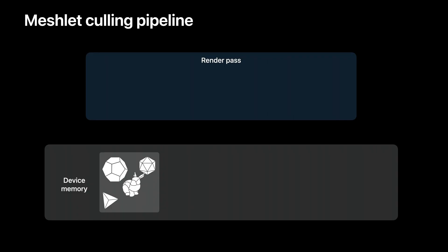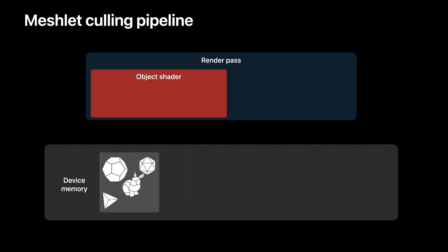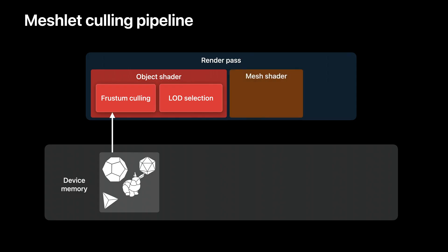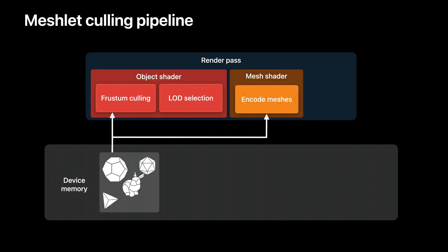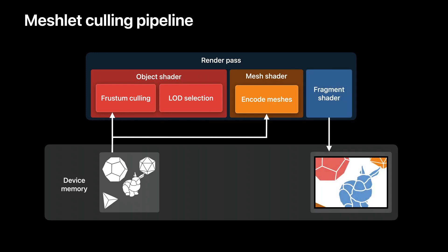Here is a single render pass that executes a mesh shader dispatch. The object shader performs frustum culling and calculates LODs for each of the visible meshlets. The payload to the mesh shader is a list of meshlet IDs that should be encoded. The mesh shader then encodes the metal mesh objects that shall be rasterized and shaded. The final image is then shaded in the fragment shader, identical to the traditional pipeline. The geometry processing is done entirely within the mesh threadgroups command and within a single encoder, with no need for intermediate buffers to store draw commands.